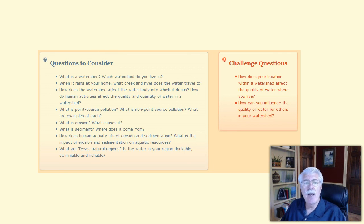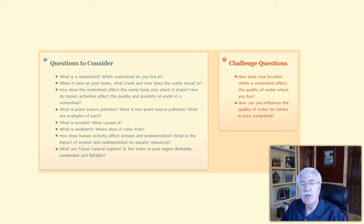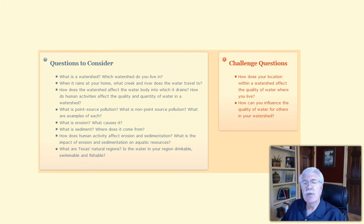How does human activity affect erosion and sedimentation? What is the impact of erosion and sedimentation on aquatic resources? What are Texas's natural regions? Is the water in your region drinkable, swimmable, and fishable? And for added thought, how does your location within a watershed affect the quality of water where you live? And how can you influence the quality of water for others in your watershed?